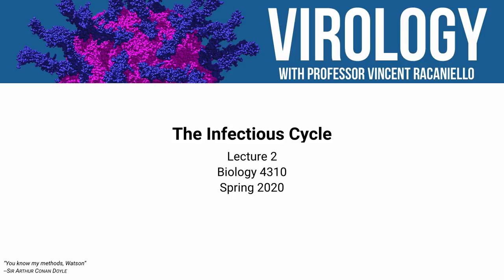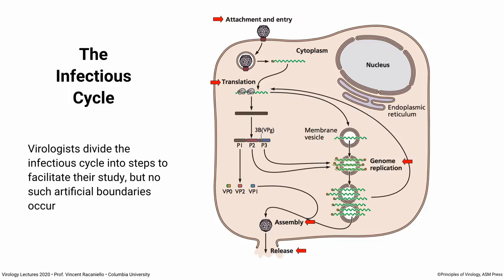Good afternoon. Welcome back. Today we're going to start getting into some nuts and bolts about viruses. We are going to talk about what I call the infectious cycle. Let's first define that: it's everything that happens from when a virus attaches to a cell and new viruses come out at the end of the cycle. Sometimes I'll call it the reproductive cycle; other people call it a replication cycle. They all mean roughly the same thing.